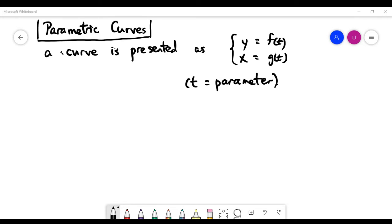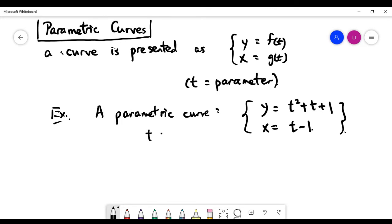Let's look at a simple example here as an introduction. I'm giving you a parametric curve where t is any real value, so it doesn't matter what value t is. I'm giving you the function of t for the y-coordinate and also x as a function of t.